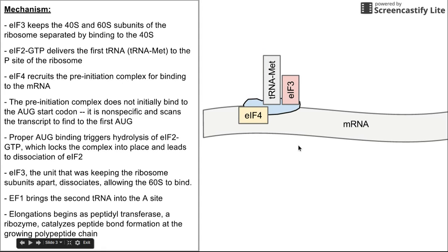Initiation factor 3 is the next to leave, and that was keeping the subunits separate, so the large 60S subunit comes in to bind. We're now ready for elongation to begin.